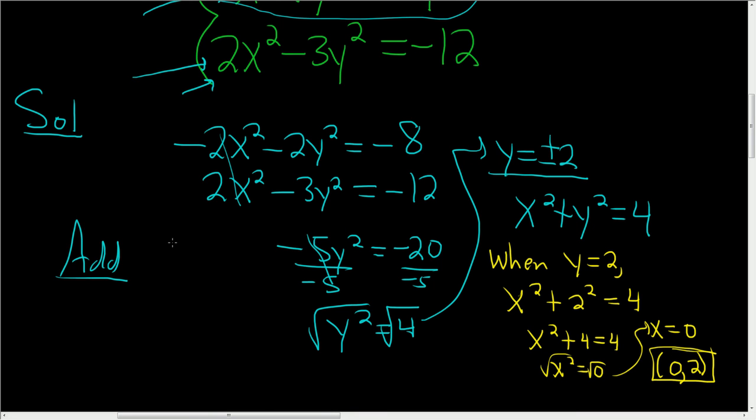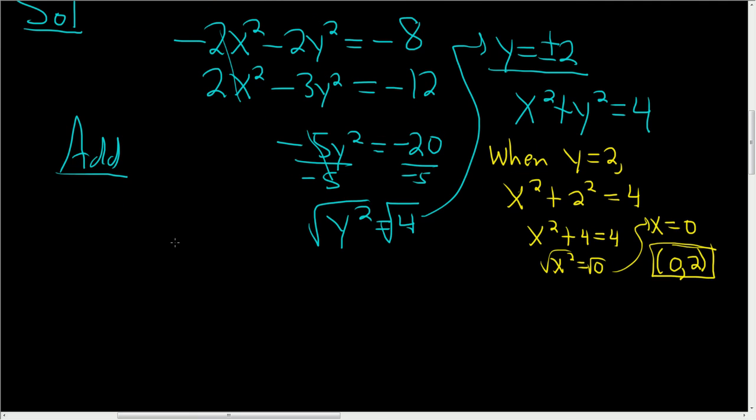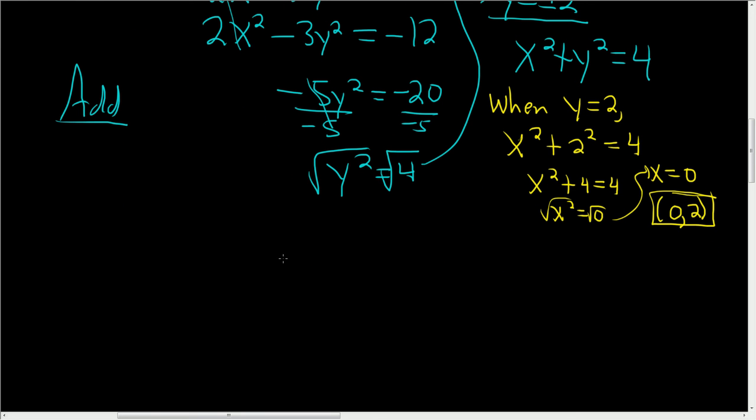To find the other one, we'll plug in negative 2. And it should be very similar. Let's see. When y equals negative 2, we have x squared plus negative 2 squared equals 4. Again, just putting negative 2 into this y value here.